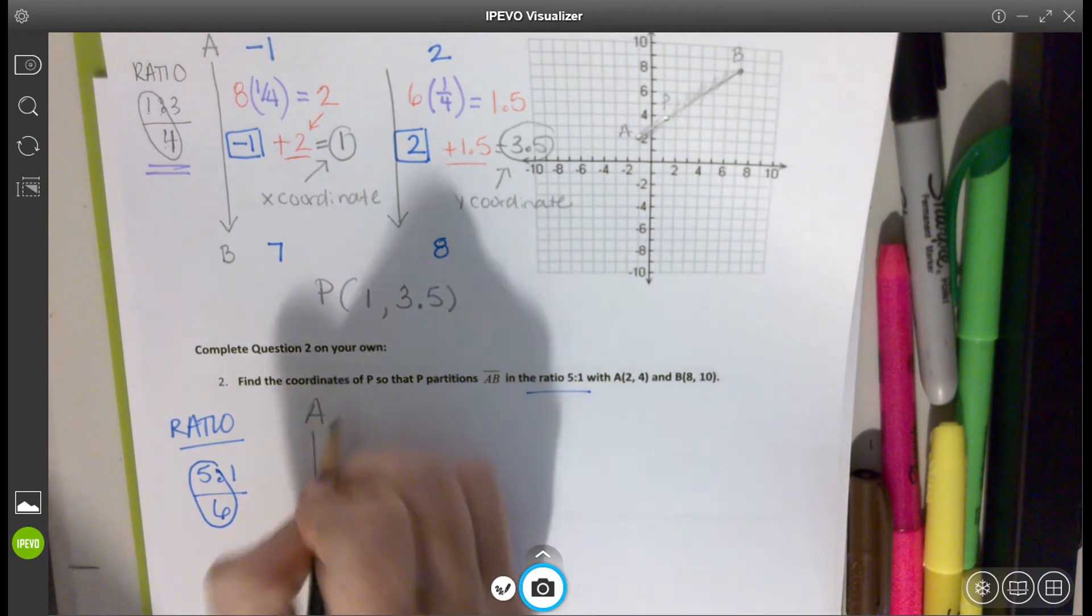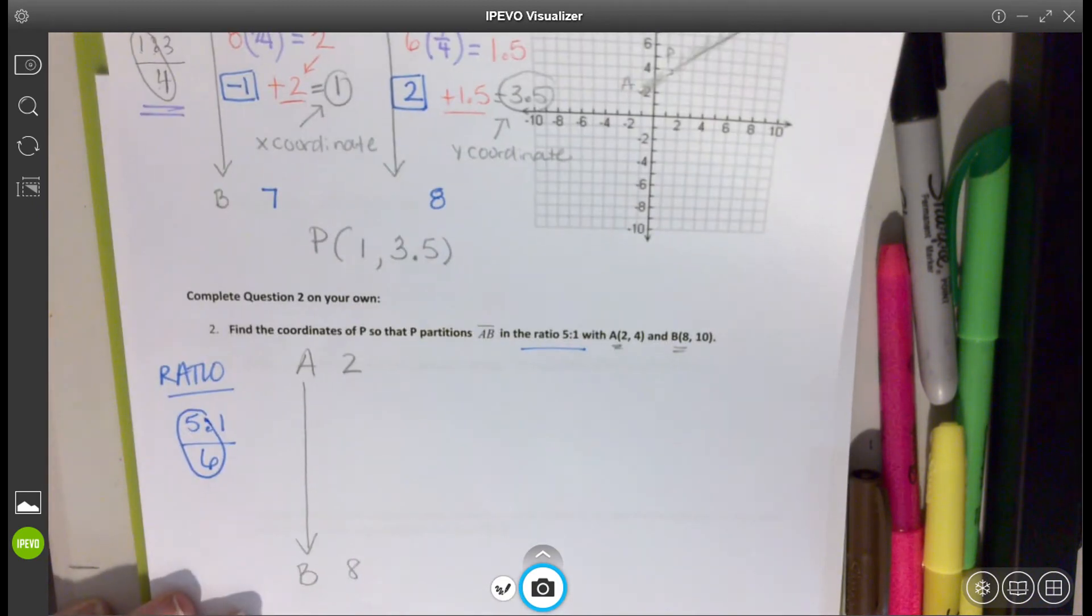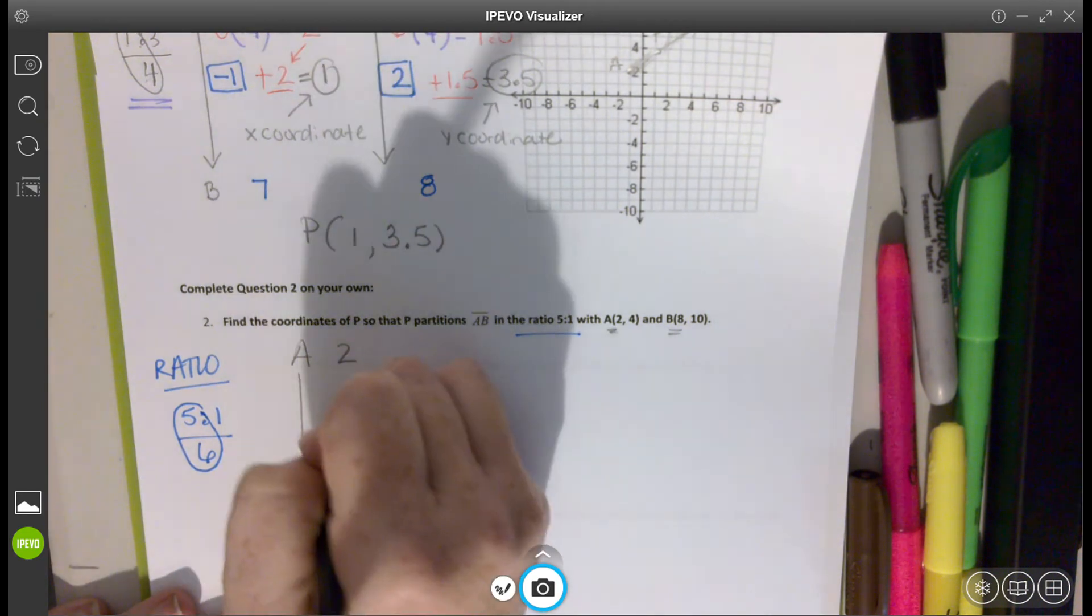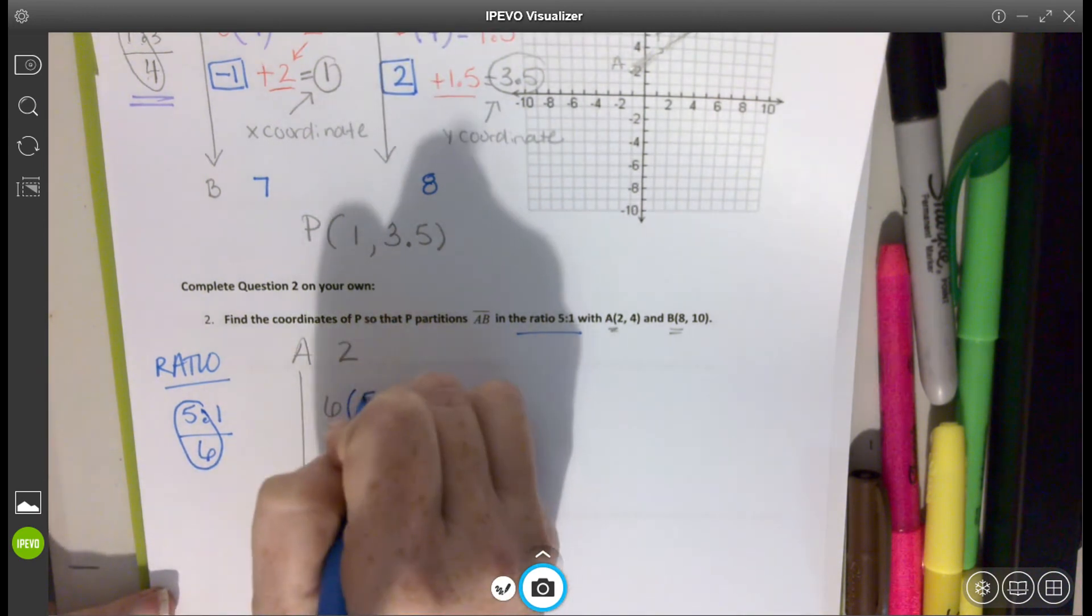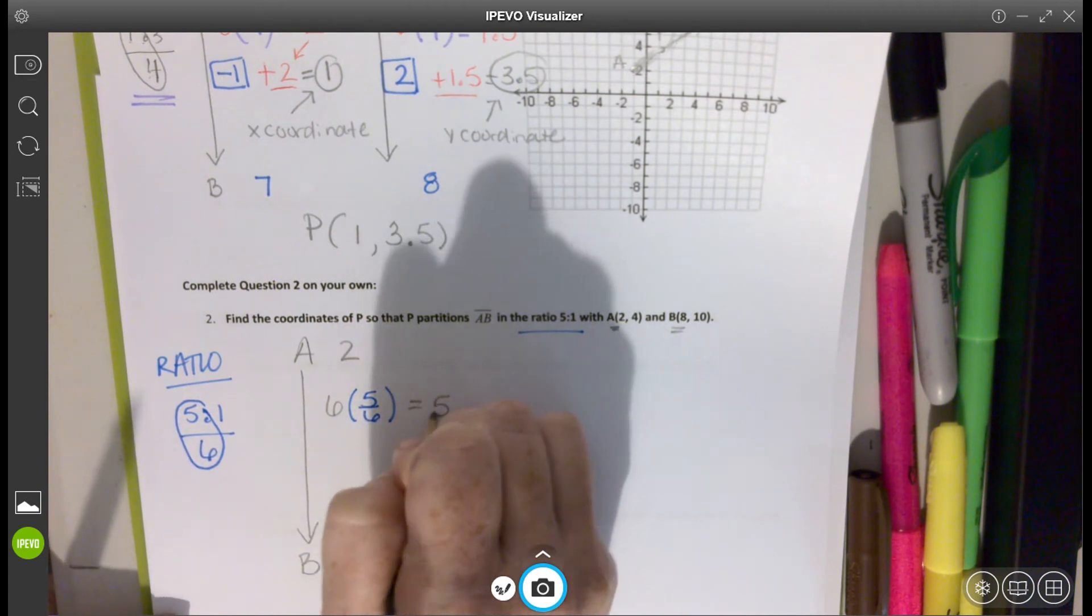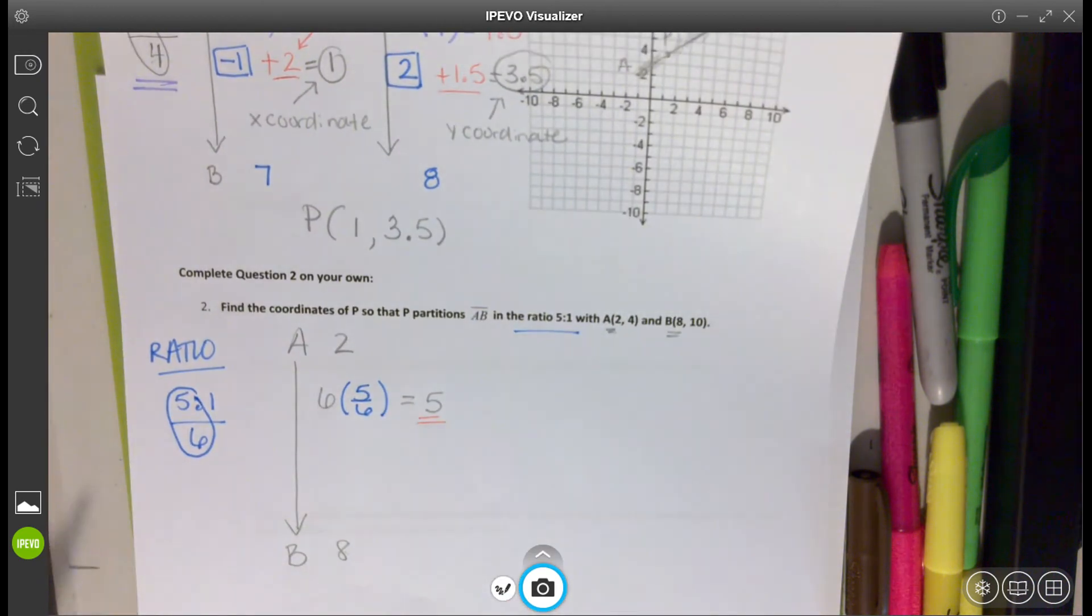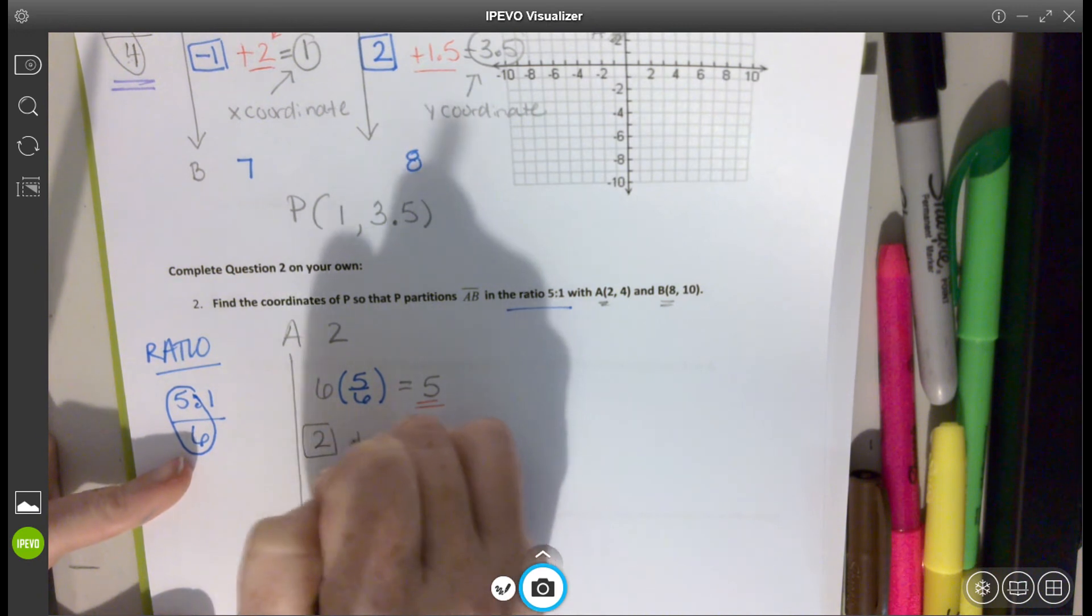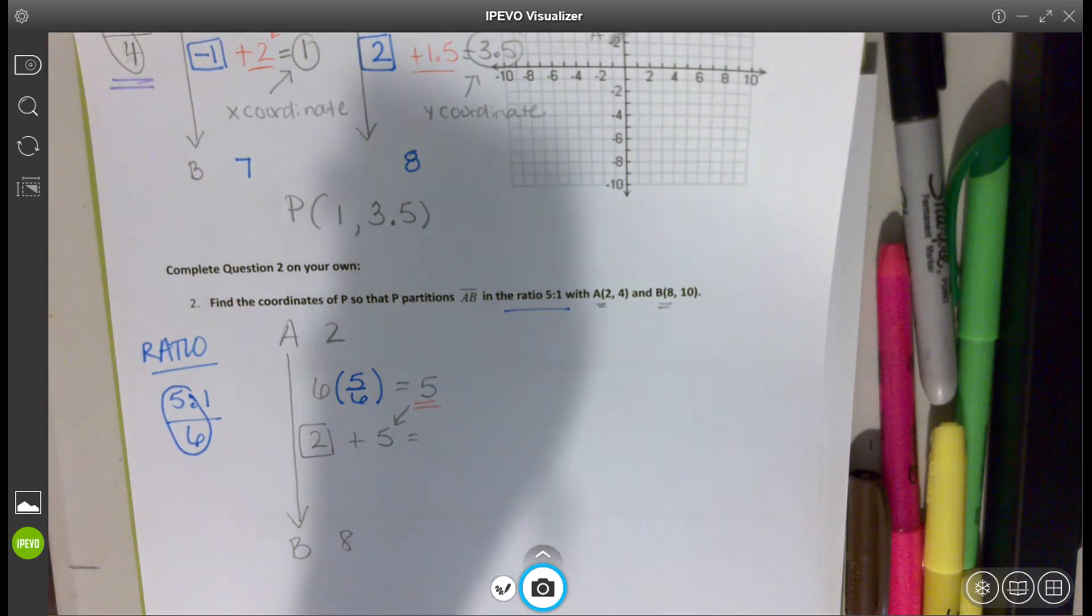So A is 2 for my x-coordinate, and 8 for my ending for B. So how many did we travel from 2 to 8 is 6, and we are using 5 sixths of the way. And that will give us 5 when we multiply. Remember that this number will tell us how much we need to move from our starting point. So our starting point was 2, and we're going to add that 5. So our new x-value is going to be 7.